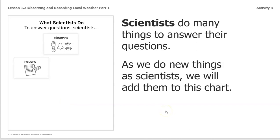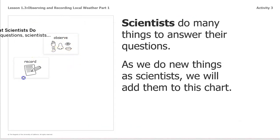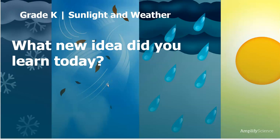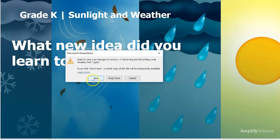Scientists do many things to answer their questions. As we do new things as scientists, we will add them to this chart. In our next lessons, you're going to see how we add more to our chart. But for today, we've learned that scientists make observations, and once they make observations, they record their observations in order to get to their answers. I really enjoyed spending time with you, and you are learning so many wonderful things. I will see you in the next lesson, 1.3 Part 2. See you soon. Have a great day. Goodbye!